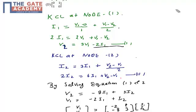If you simplify this equation, you will get 2I2 equals 6I1 plus V2 minus V1.